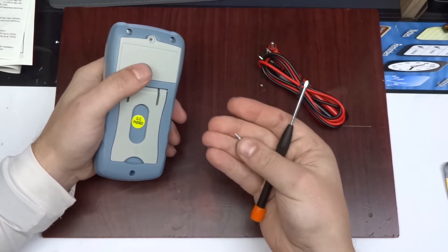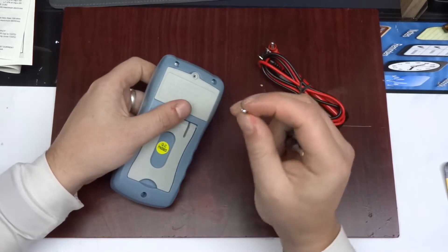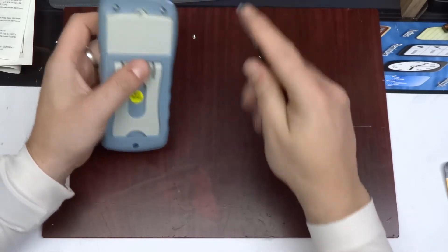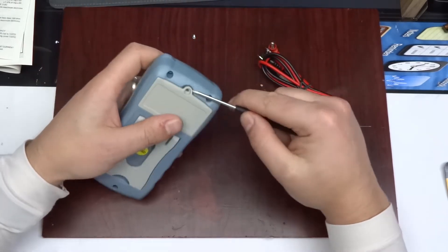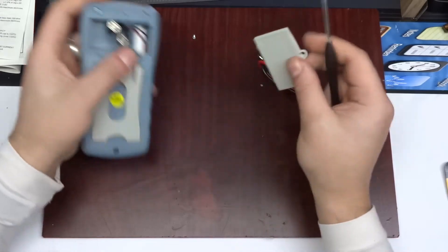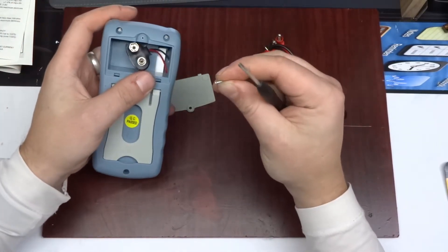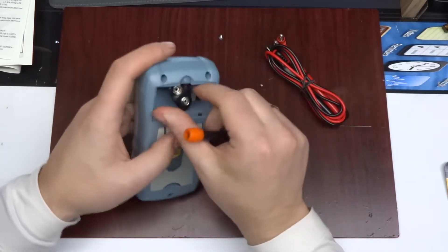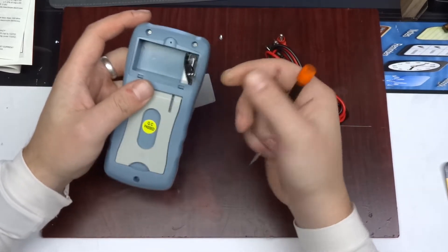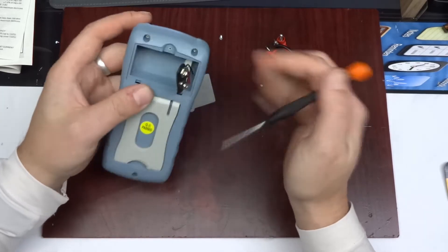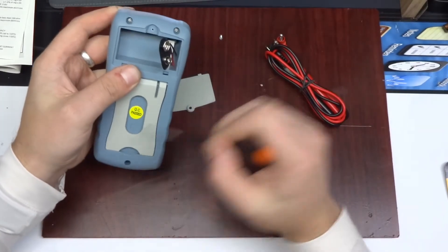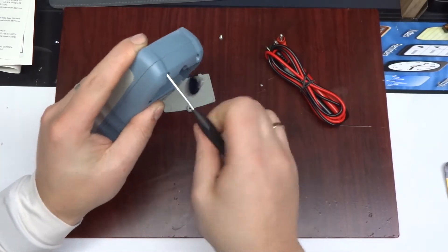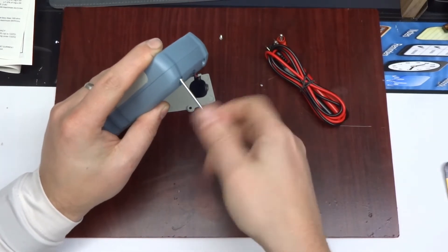Of course, quality screws, self-tapping ones, the worst kind. Very thin thread on it, very shallow. Battery compartment and three screws to hold the whole thing together. Let's have a look what's in.